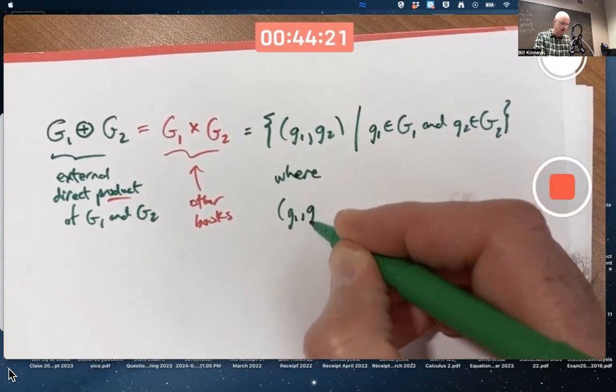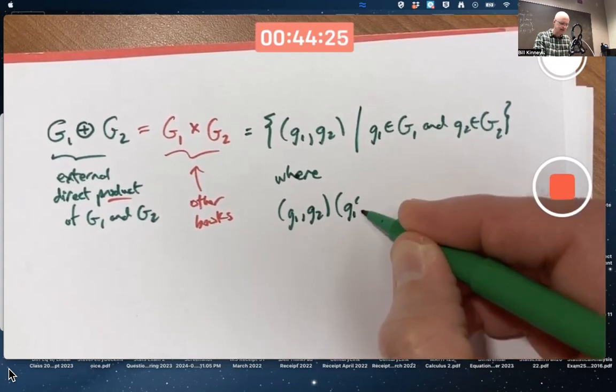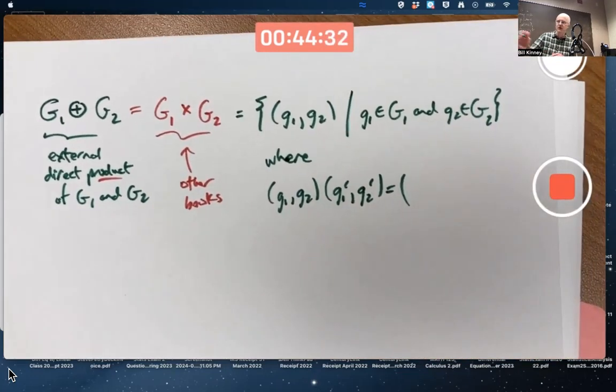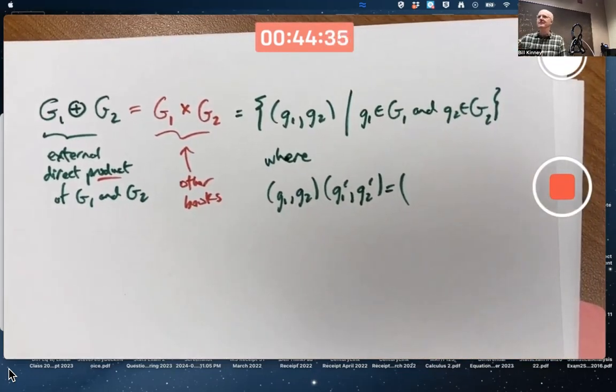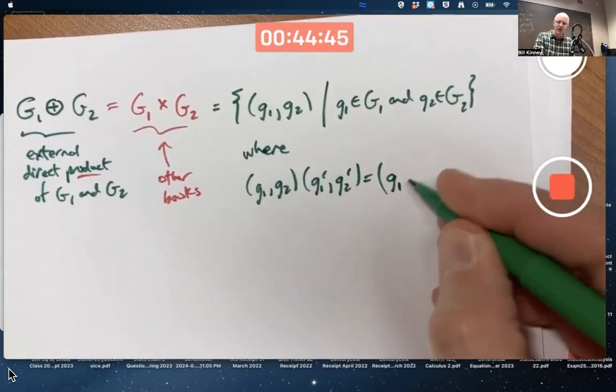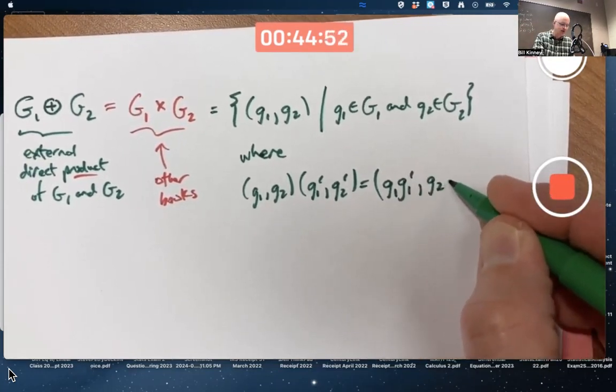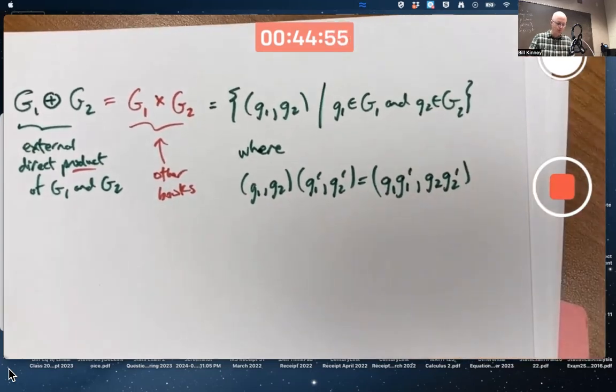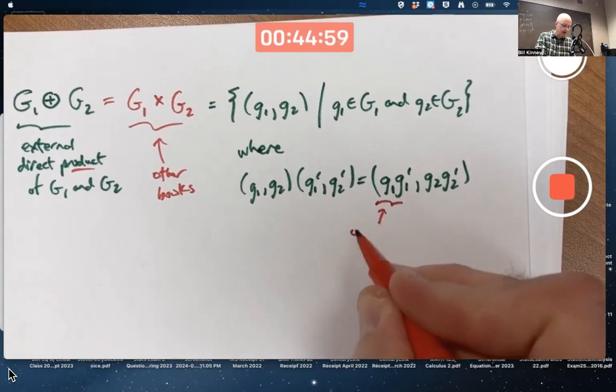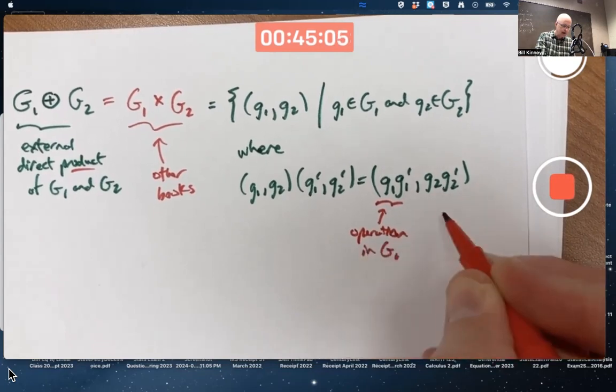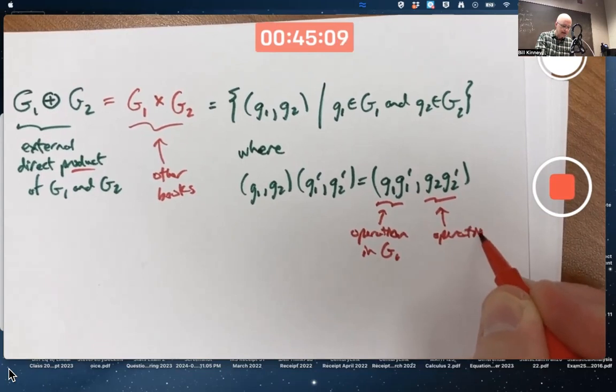If I want to multiply two elements in this external direct product, say these two elements, what do I do? You do the thing you always wanted to do in linear algebra, but Dr. Aux said, no, don't do that. Did you always want to do this in linear algebra or not? Maybe not, but you multiply component-wise. (g1, g2) times (g1', g2') equals (g1 times g1', g2 times g2'), where it's assumed that this is the operation in capital G1, and this is the operation in capital G2.